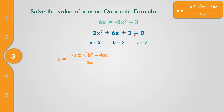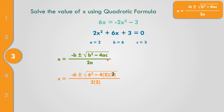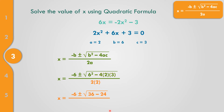Now we can replace the values of A, B, and C into the quadratic formula. That becomes X equals negative 6, plus or minus the square root of 6 squared minus 4 times A equals 2 times C equals 3, all over 2 times 2. Solving: 6 times 6 equals 36. Negative 4 times 2 is negative 8. Negative 8 times 3 equals negative 24. 2 times 2 equals 4.